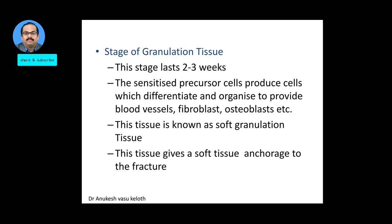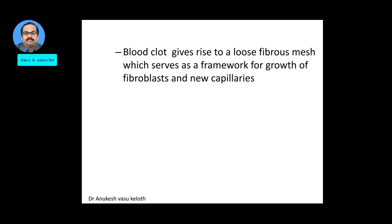The second phase is the stage of granulation tissue, lasting about 2 to 3 weeks. The sensitized precursor cells produce cells which differentiate to form blood vessels, fibroblasts, and osteoblasts. This cellular tissue is known as soft granulation tissue and gives soft tissue anchorage to the fracture, though the fracture ends are still mobile during this phase. The blood clot forms a loose fibrous mesh serving as a framework for the growth of fibroblasts and new capillaries.